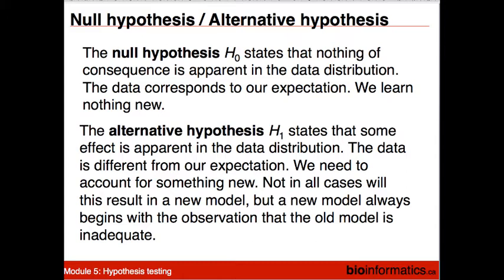Fundamental to all of this is the idea of a null hypothesis and an alternative hypothesis. The null hypothesis, sometimes called H0, simply states that nothing of consequence is apparent in the data distribution — nothing happens. All of our data elements are drawn from the same distribution. There's no reason why we would claim that one element should be treated preferentially from another. This entirely corresponds to our expectation — boring, nothing goes on. The alternative hypothesis states that some effect is apparent and the data is different from what we expected.